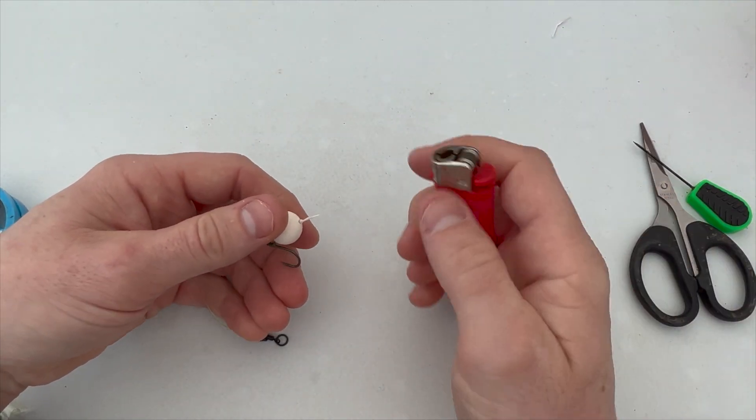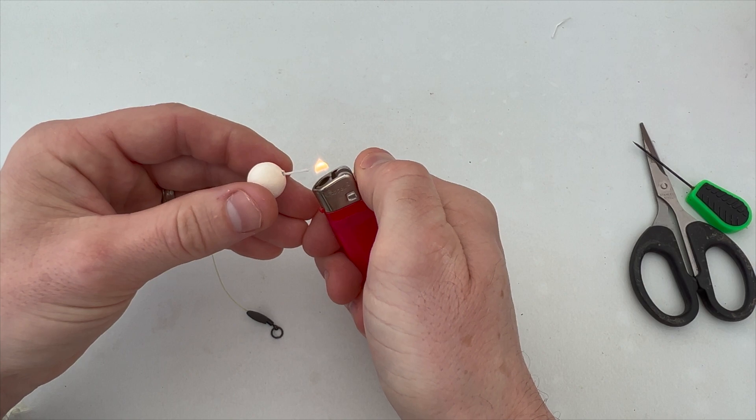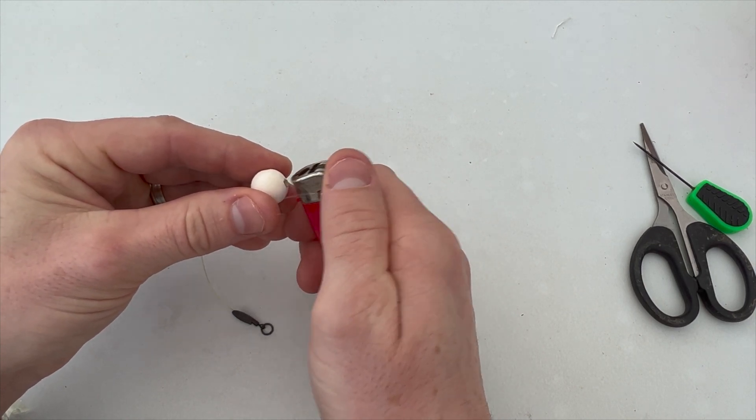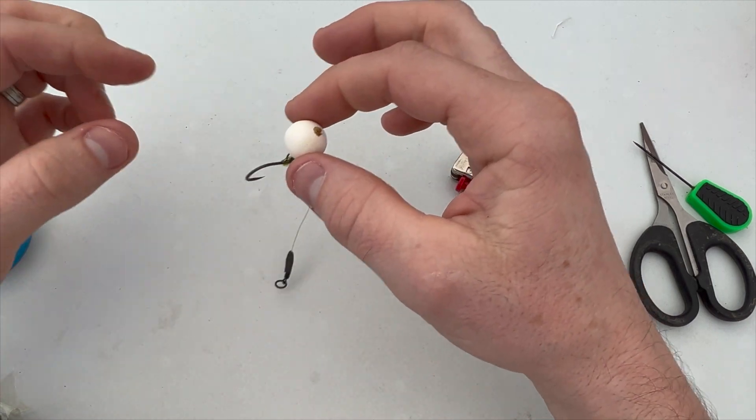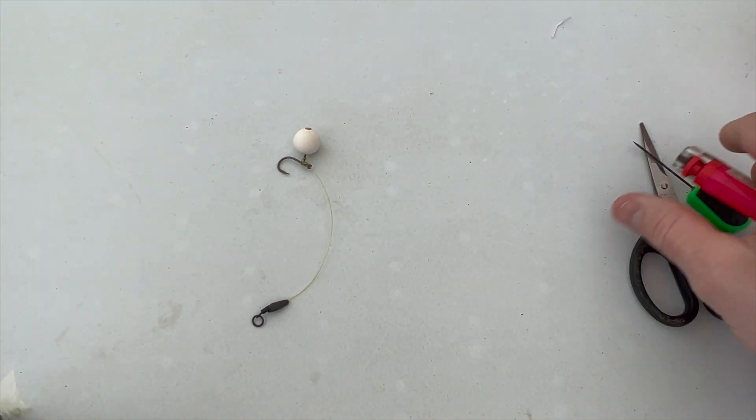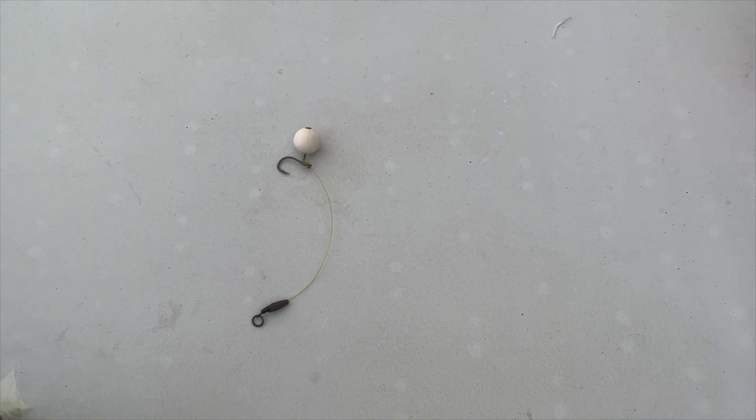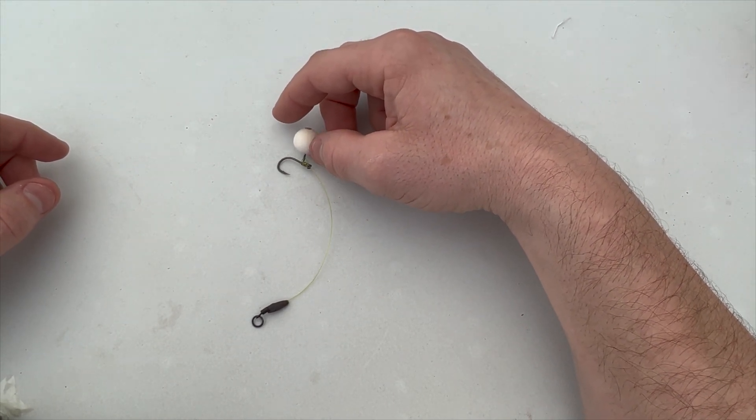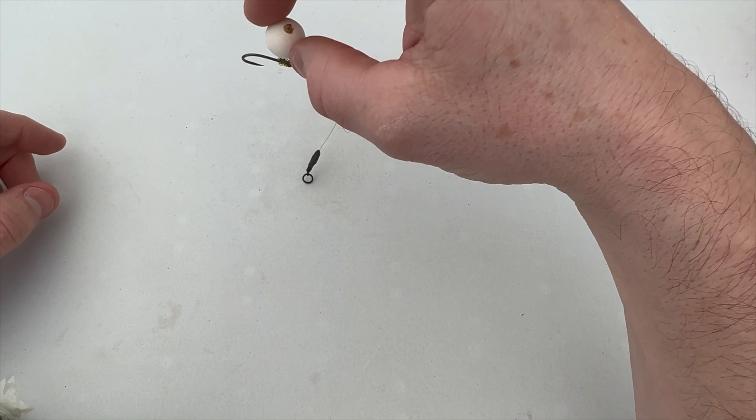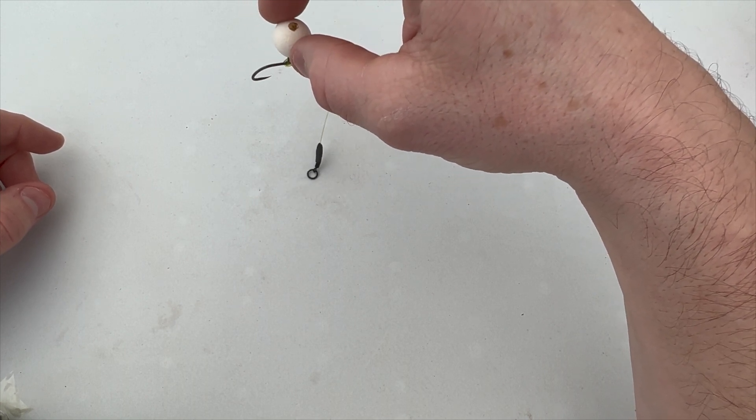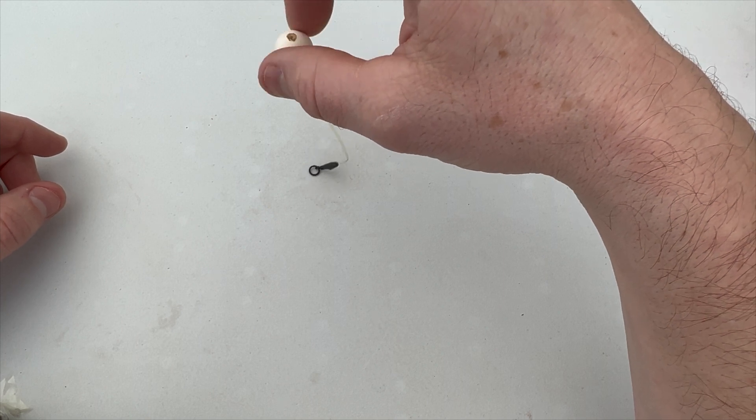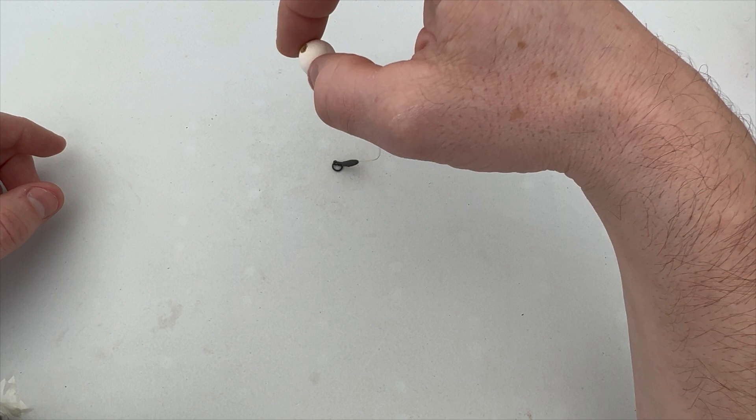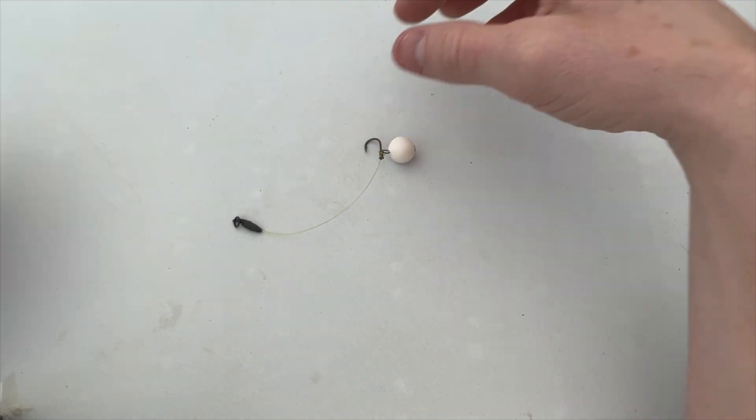Trim off the end. Again, take our lighter, blob down the floss, a little bit on the end. And there you have it, the chod rig, ideal solution for anywhere there with some chod silt and even a bit of weed, will sit perfectly above the surface of that silt. And as you can see that's turning lovely anywhere in the fish's mouth.